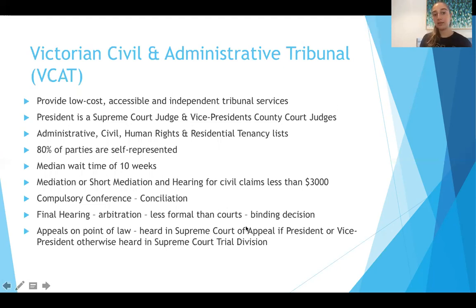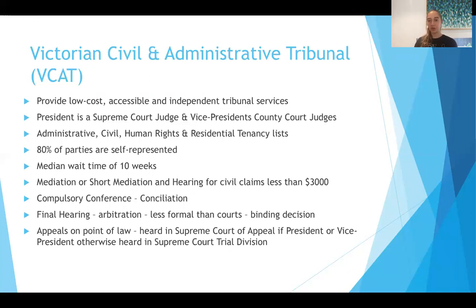VCAT is Victoria's Civil and Administrative Tribunal, which provides low-cost, accessible and independent tribunal services. VCAT has a president who is a Supreme Court judge, vice presidents who are County Court judges, and members and senior members — so it's not staffed by judges and magistrates. VCAT has four lists: the administrative list for council disputes, the civil list covering most disputes including consumer contracts, the human rights list for discrimination cases, and the residential tenancy list for tenant and landlord disputes — though unlike CAV, claims in the residential tenancy list can be brought from both the tenant and the landlord. These four lists ensure that VCAT is very specialised within each area.